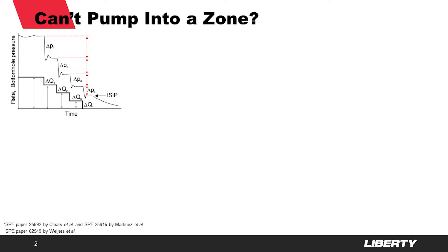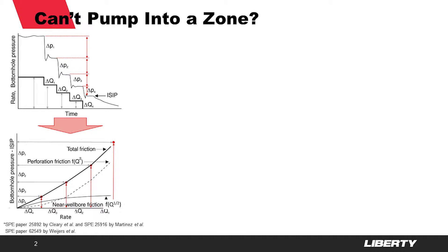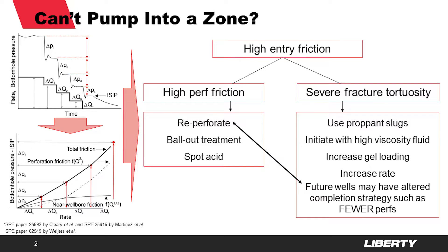The step-down test has been around for a while. If you want to know more about the step-down test itself, there are plenty of SPE papers that you can dive into, which I've listed on the lower left of the picture here. We conduct rate changes to determine how the pressure changes as a function of these rate changes, and with that we are able to determine how much near-wellbore friction there is and how much perforation friction there is. Often how we use that information is to determine, in case there is high entry friction, what is the cause of that high entry friction and what are the potential fixes we can evaluate either within the stage or in the next stage that we're going to frack.